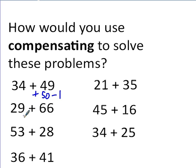Here, in this example, I would probably add 30 instead of 29, and then take away 1. Down here, instead of adding 28, I would add 30, but then take away 2.